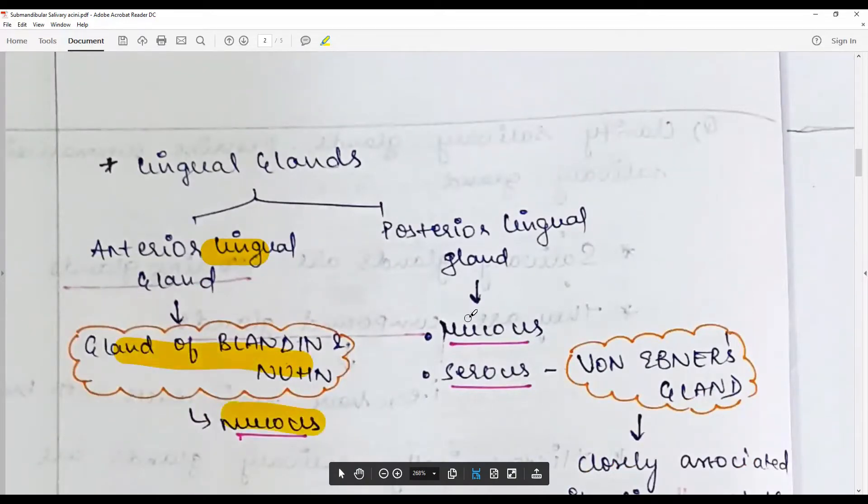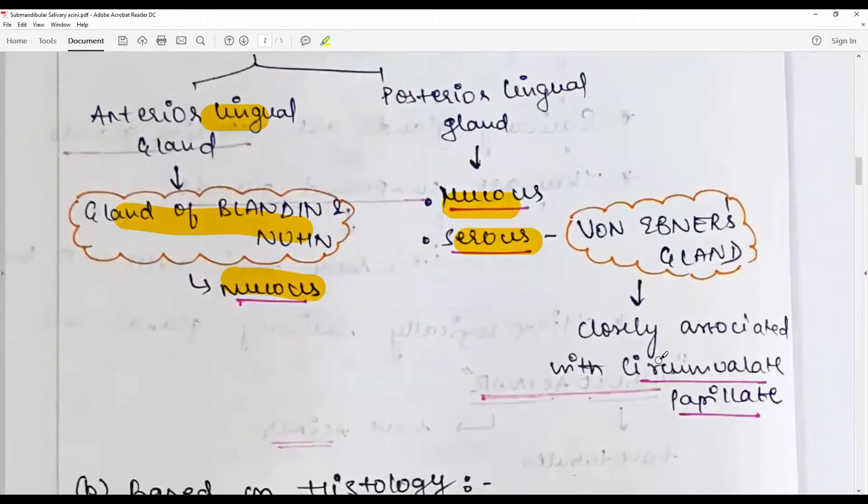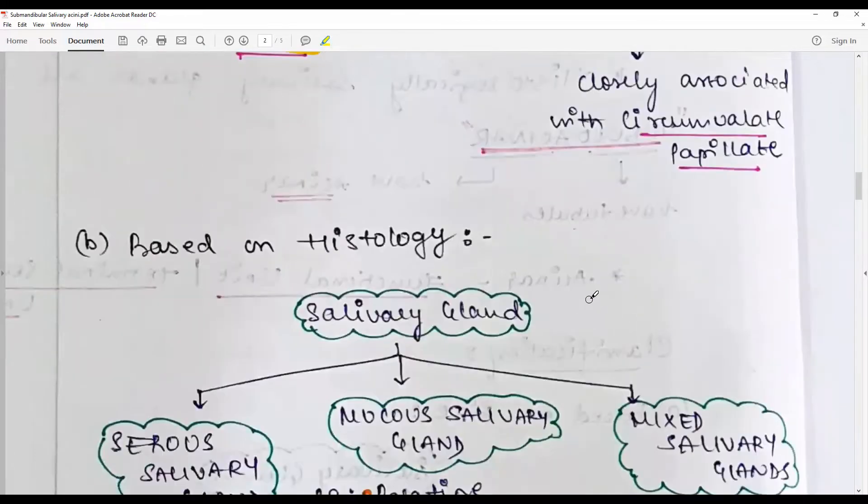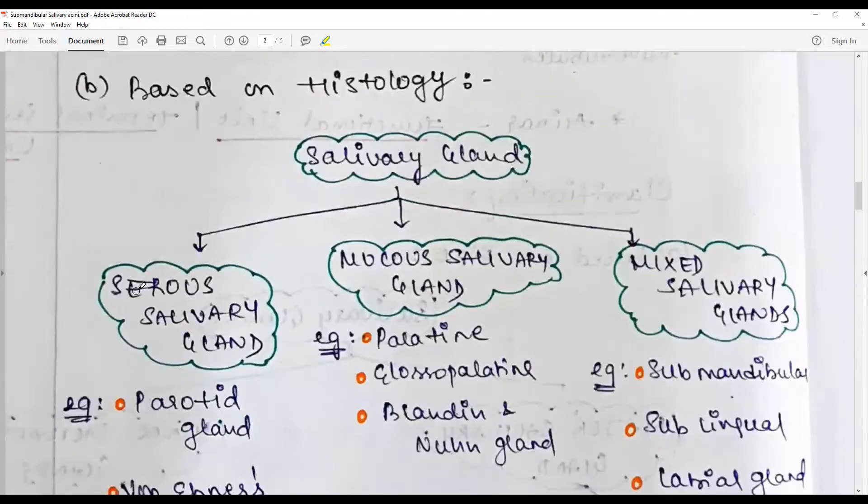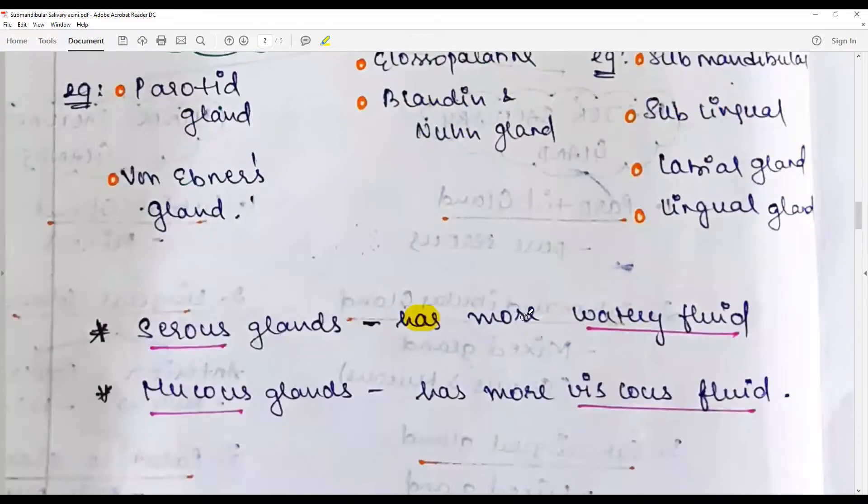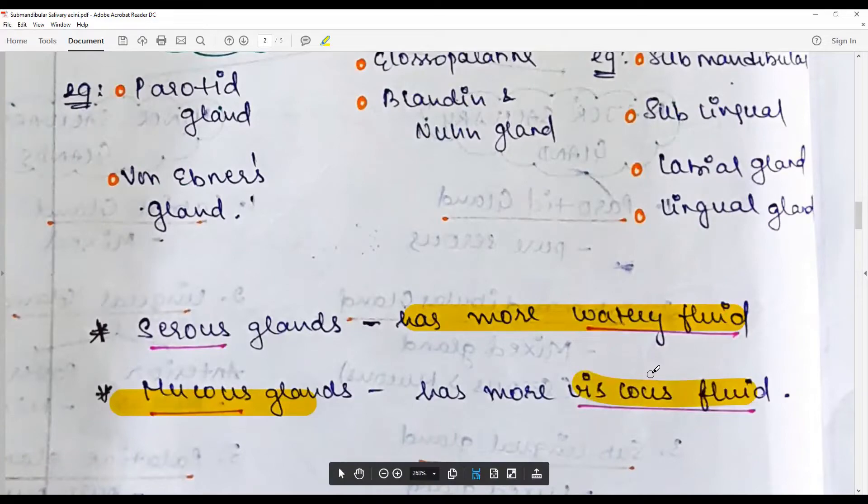Posterior you have mucus as well as serous. Serous is the Ebner groups of salivary glands associated with the circumvallate papilla. Based on histology, salivary glands are classified as serous, mucus, or mixed. Serous salivary glands have more watery fluid secretion, whereas mucus glands secrete more viscous thick fluid.